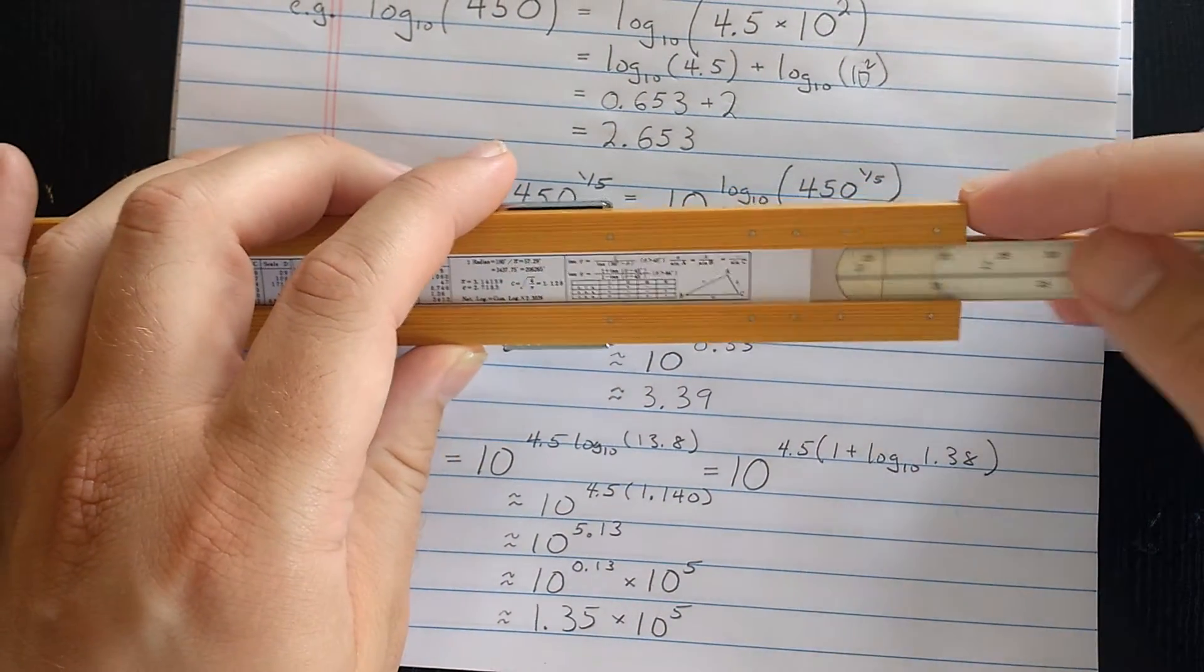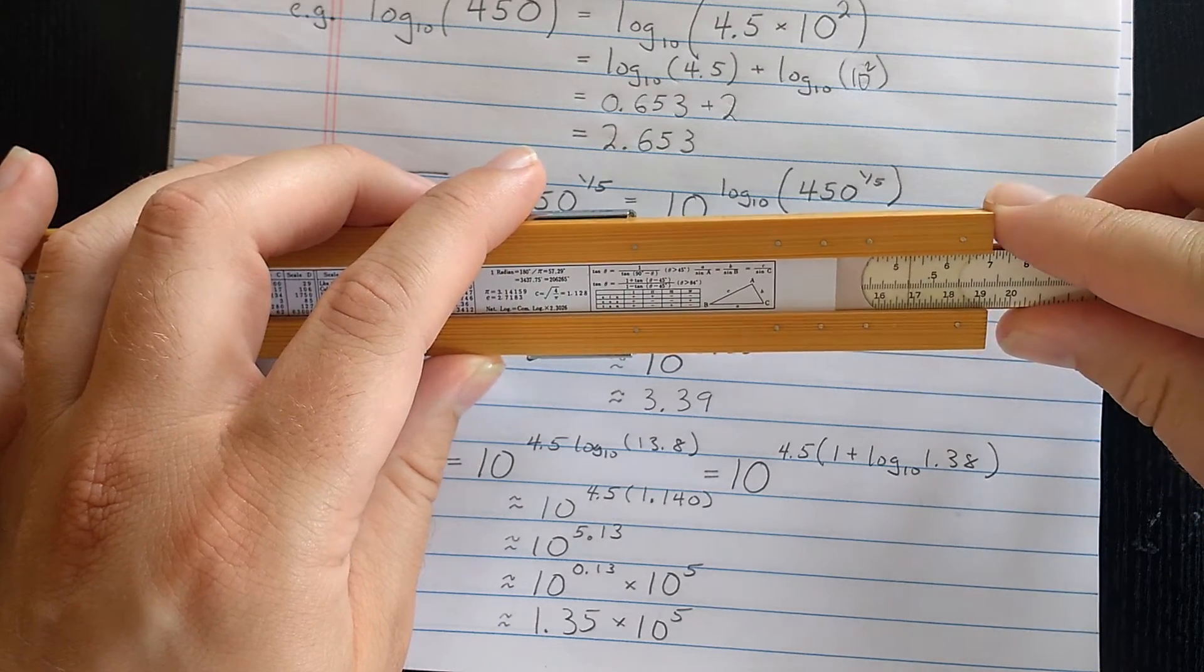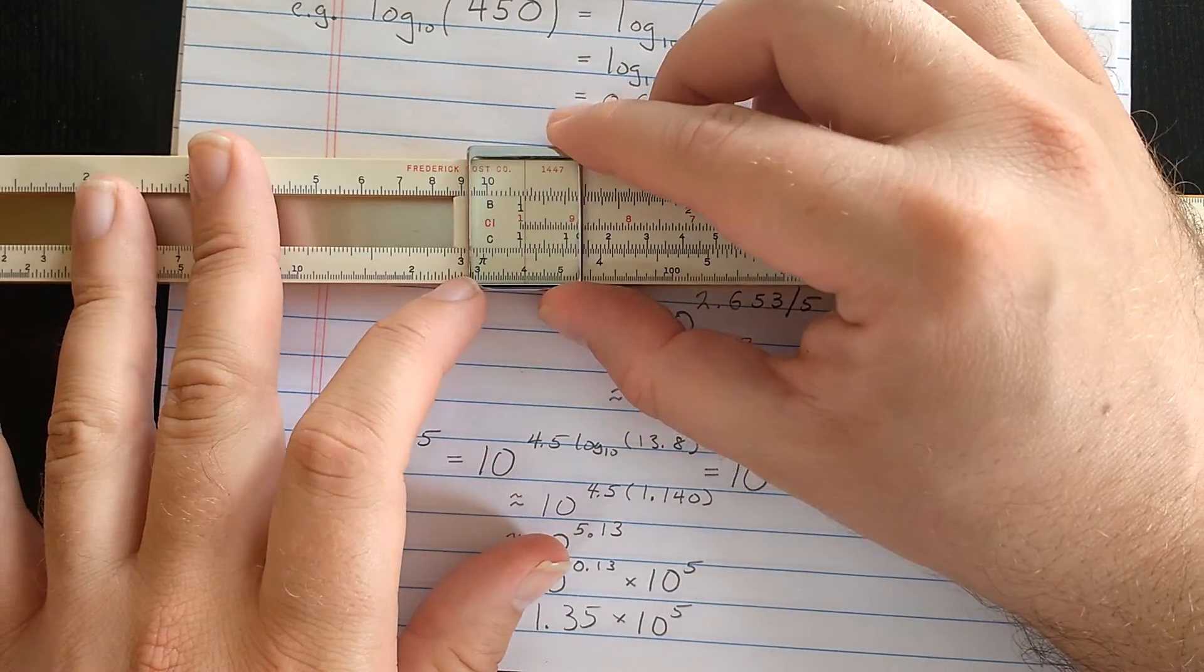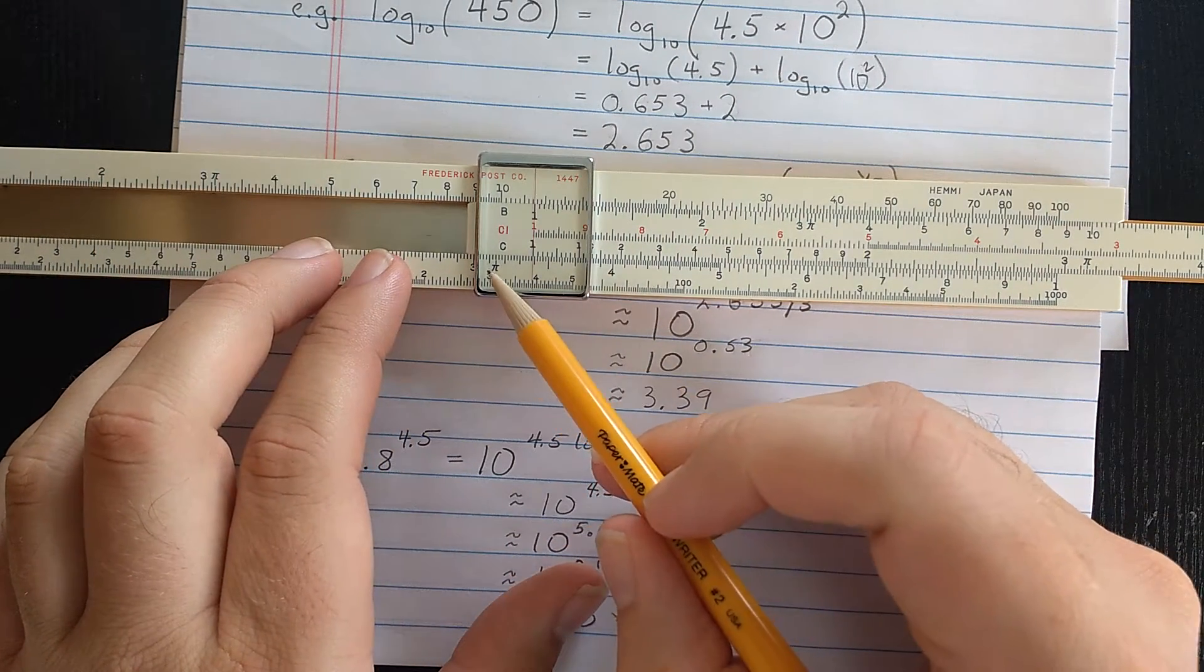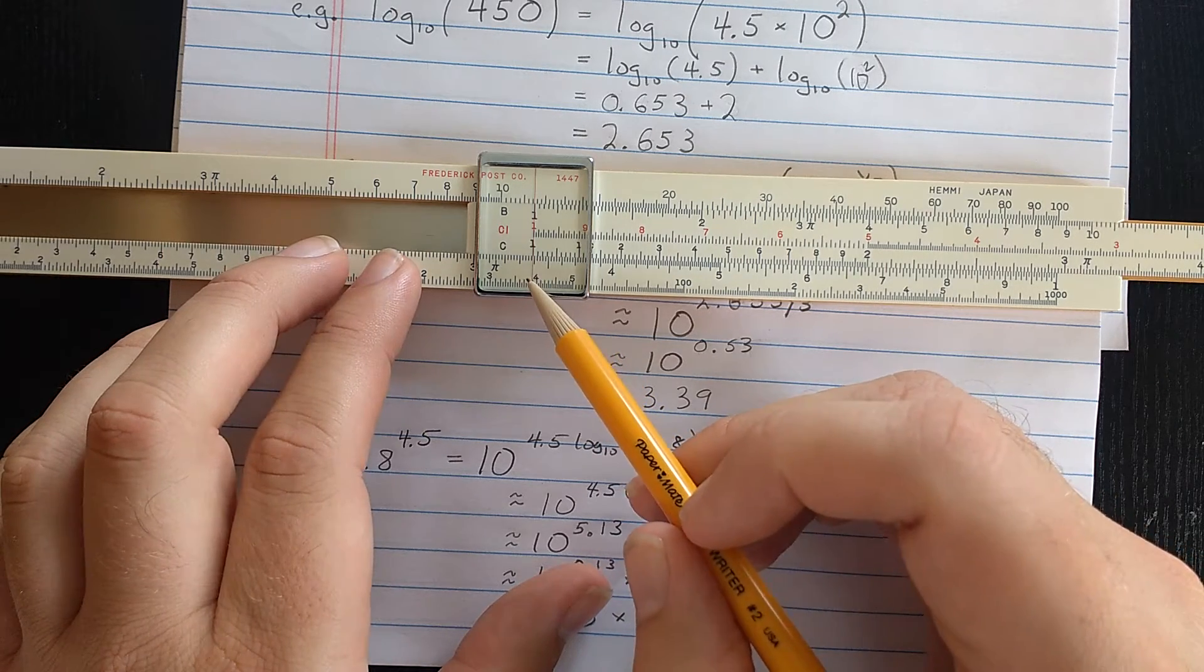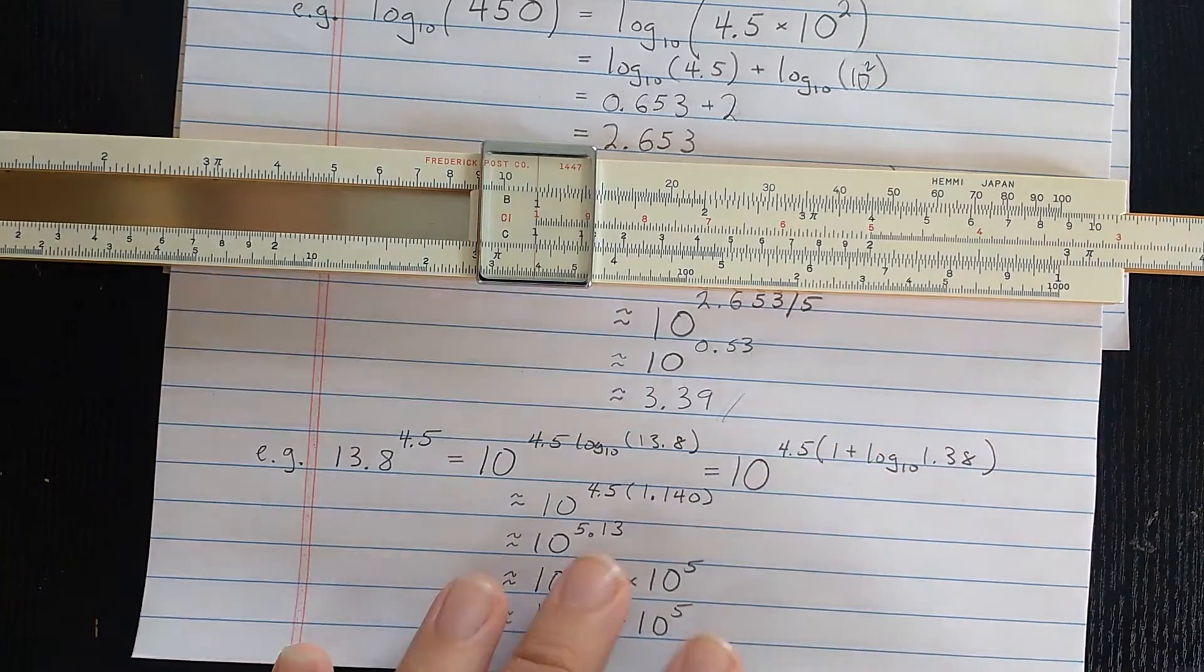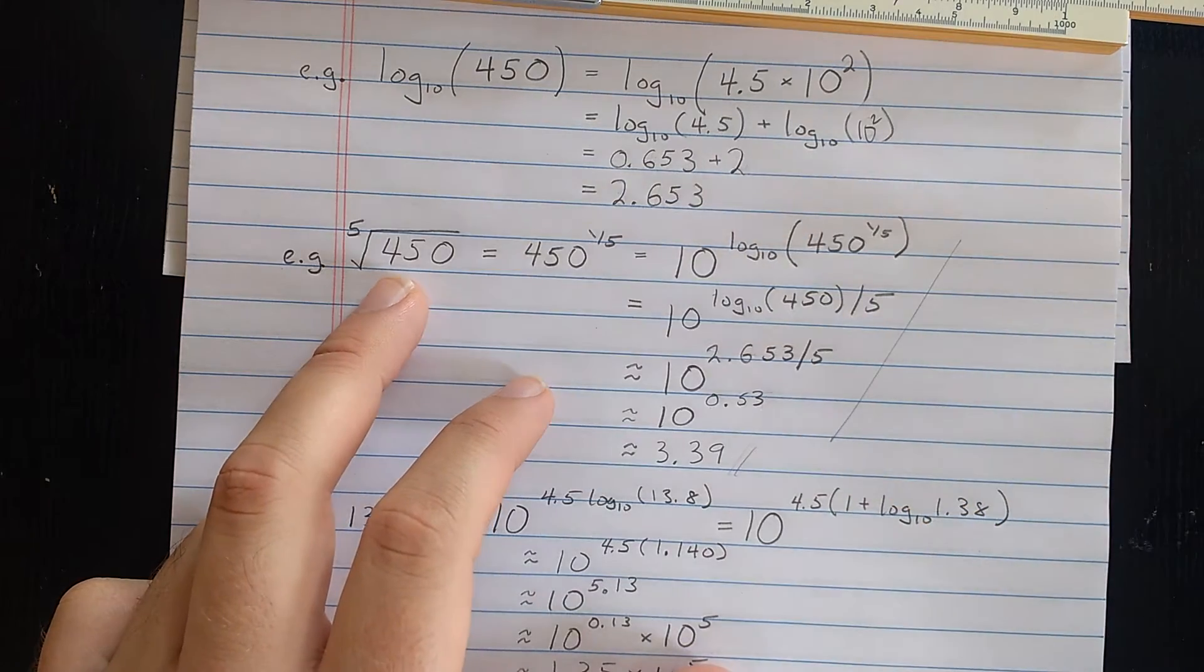Now, 0.53, I want to raise 10 to that power. Well, I need to find the 0.53. Now let's use the other side on the L scale. So let's see there. I have 5, 1, 5, 2, 5, 3. I flip. I find the index. And I see the result there. 3.123. Not 3.4, between 3.38 and 3.4. So we'll go with 3.39. And just like that, I've computed the fifth root of 450. Now that was a lot of work, right?